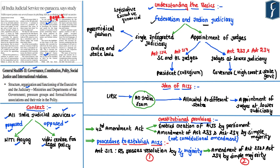The judiciary in India is said to be single because the judicial structure is arranged in a pyramidical fashion, with the Supreme Court at the top, followed by the High Courts at the state level, then the District Courts, and below them the lower subordinate courts. Secondly, the Indian Judiciary is said to be integrated because this single system of courts enforces both central as well as state laws. Such a structure is quite distinct from the structure of judiciary adopted in case of USA.